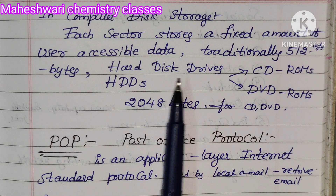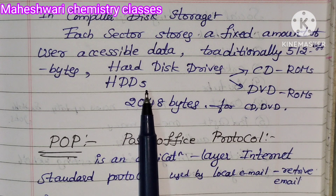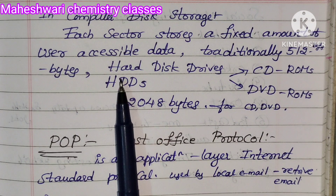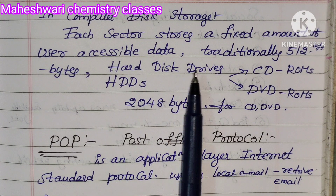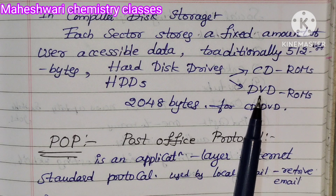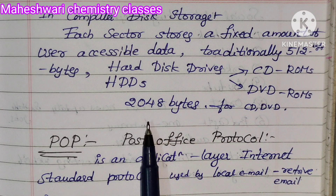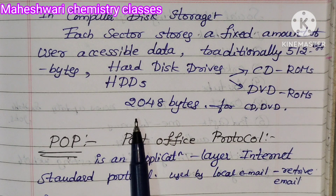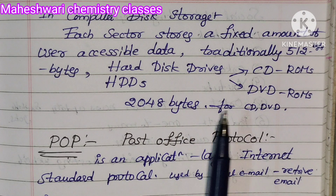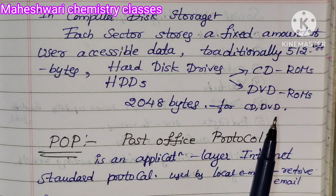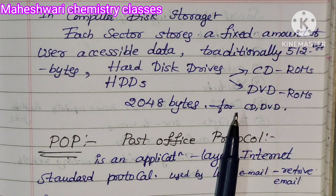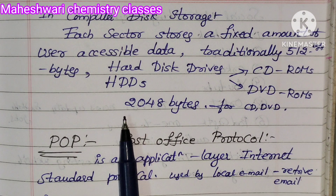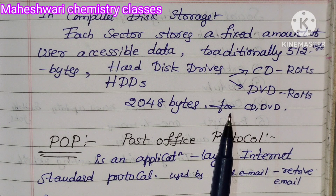Hard Disk Drives (HDDs) use 512-byte sectors. For CD-ROM and DVD-ROM, the sector size is 2048 bytes. CD/DVD discs also store 2048 bytes per sector.